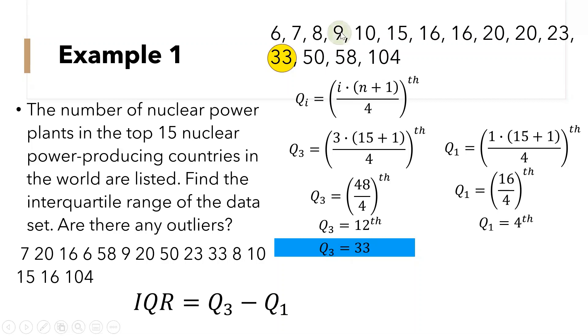So let us count to the fourth position. So the quartile 1 is 9.